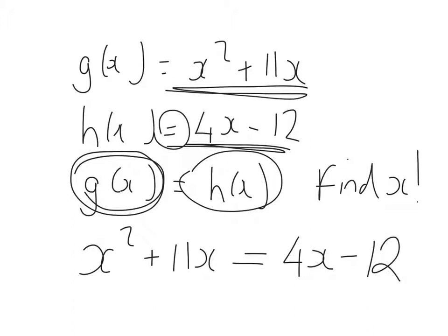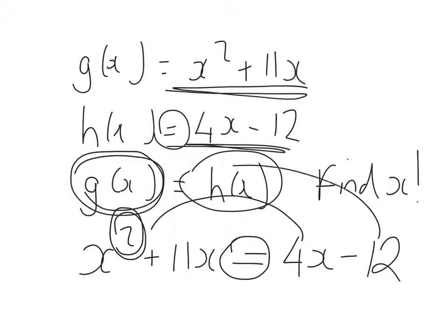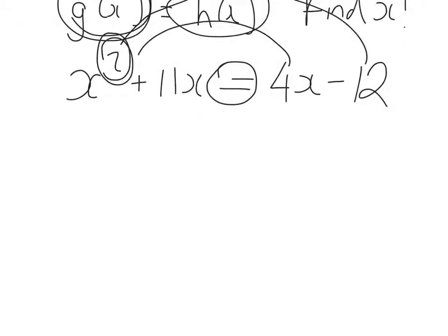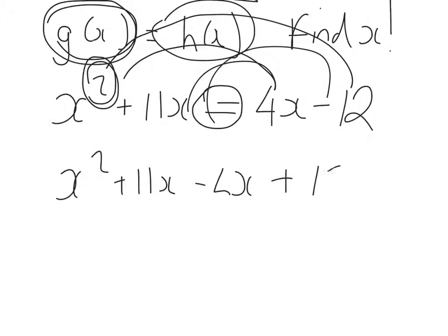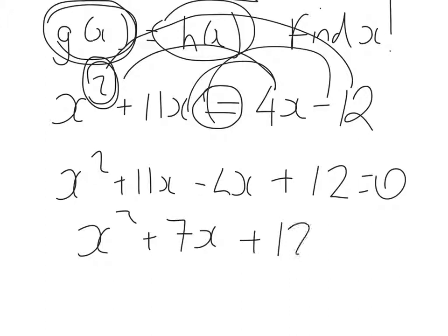In terms of what to do next, I would then see that this is a quadratic equation, and to solve a quadratic equation I need to make it equal to 0, so I'll bring that stuff across to the other side. So that will be x squared plus 11x minus 4x plus 12 is equal to 0. That's x squared plus 7x plus 12 is equal to 0.